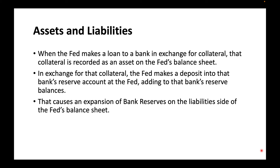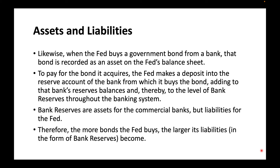That causes an expansion of bank reserves on the liability side of the Fed's balance sheet. Likewise, when the Fed buys a government bond from a bank, that bond is recorded as an asset on the Fed's balance sheet. To pay for the bond it acquires, the Fed makes a deposit into the reserve account of the bank from which it buys the bond, adding to that bank's reserve balances and thereby to the level of bank reserves throughout the banking system. Bank reserves are assets for the commercial banks, but liabilities for the Fed. Therefore, the more bonds the Fed buys, the larger its liabilities, in the form of bank reserves, become.